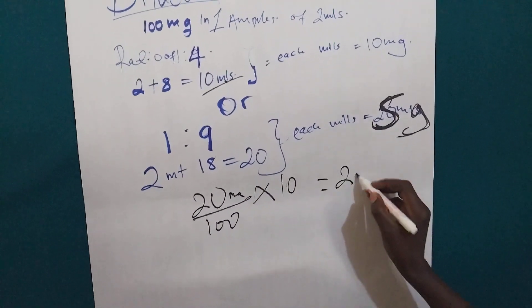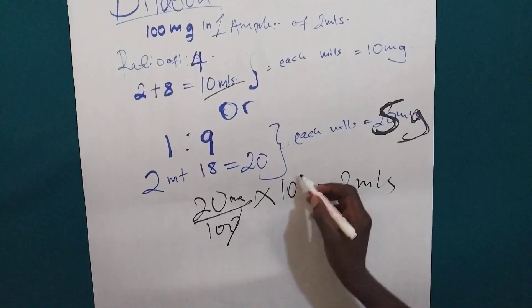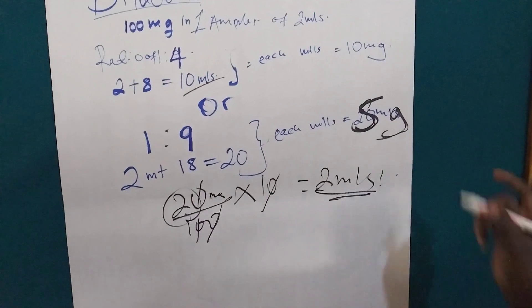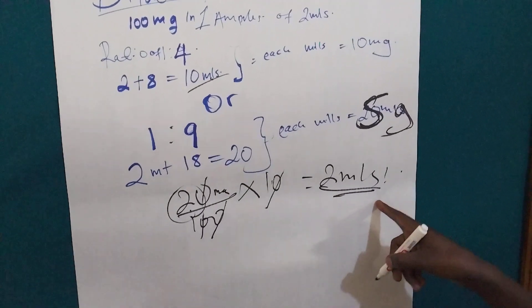So, this one will give us 2 mL. If you cross this, you cross this. The remaining one is 2 mL. So, we are going to give 2 mL.